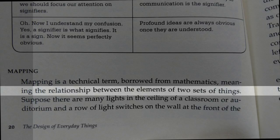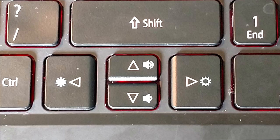For example, the arrow keys on a keyboard are arranged so that the up arrow key is on the top, the left arrow key is on the left, the right key is on the right, and the down key is on the bottom. Pretty simple, but it makes using the arrow keys much easier.